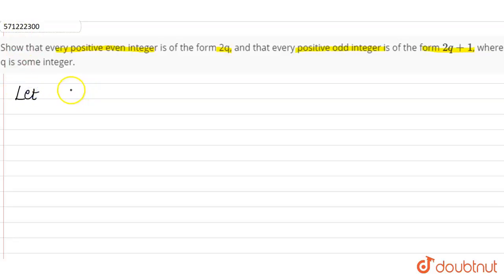Let A be any positive integer and B equals 2. Why 2?